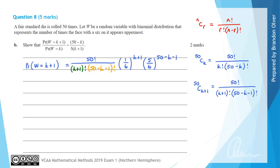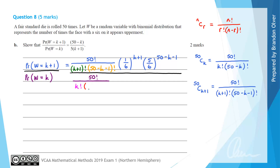We divide that by the probability that W equals K. That expression is 50 factorial divided by K factorial — in pink — times (50 minus K) factorial in red, multiplied by (1/6) to the power of K, times (5/6) to the power of 50 minus K. That bottom expression was exactly what we found in part A. Our task now is just to simplify this fraction.